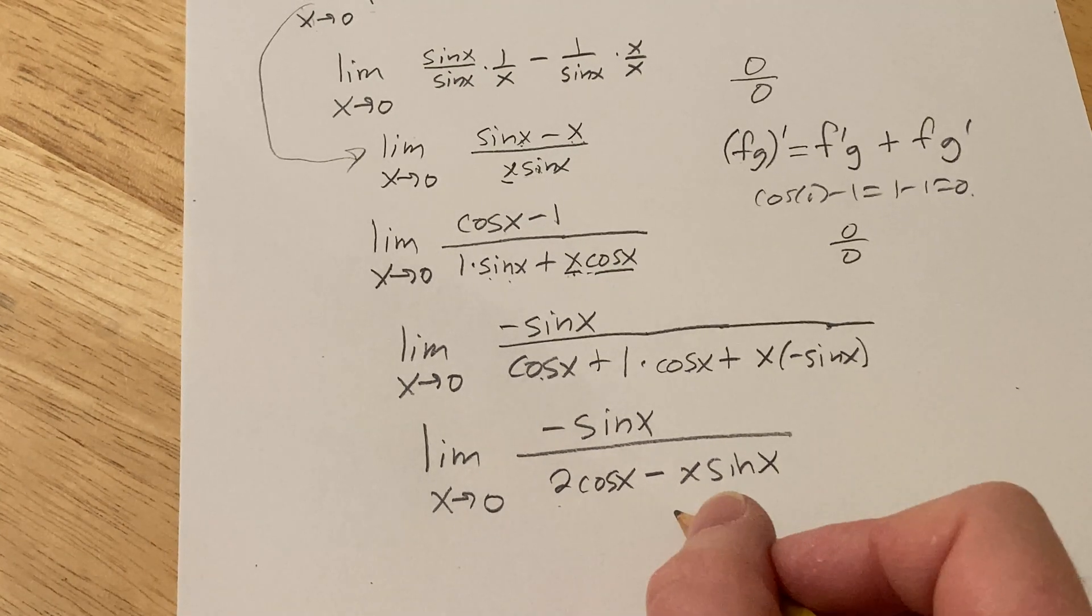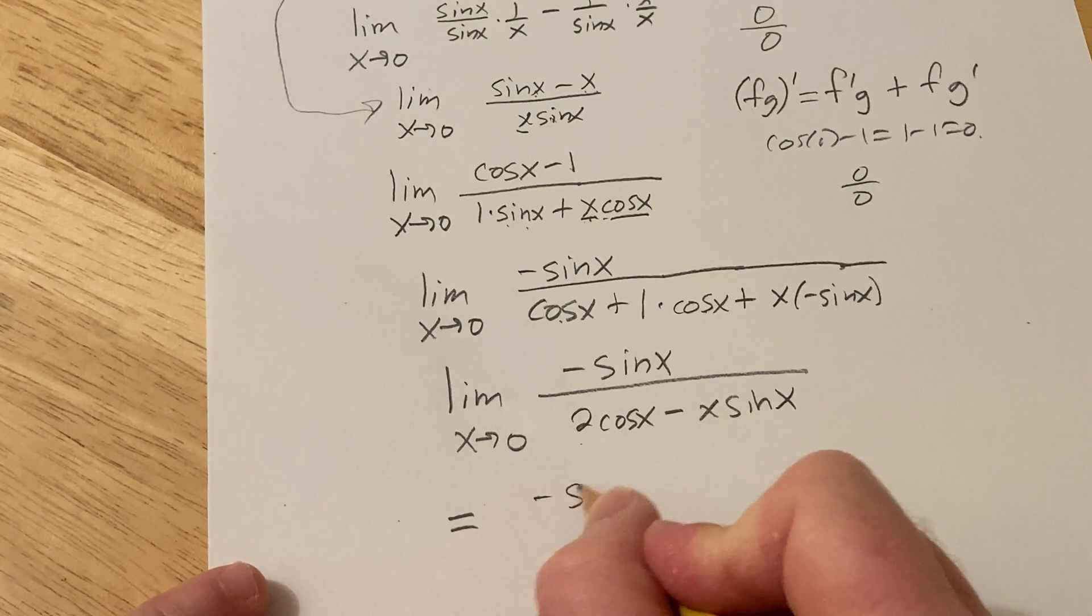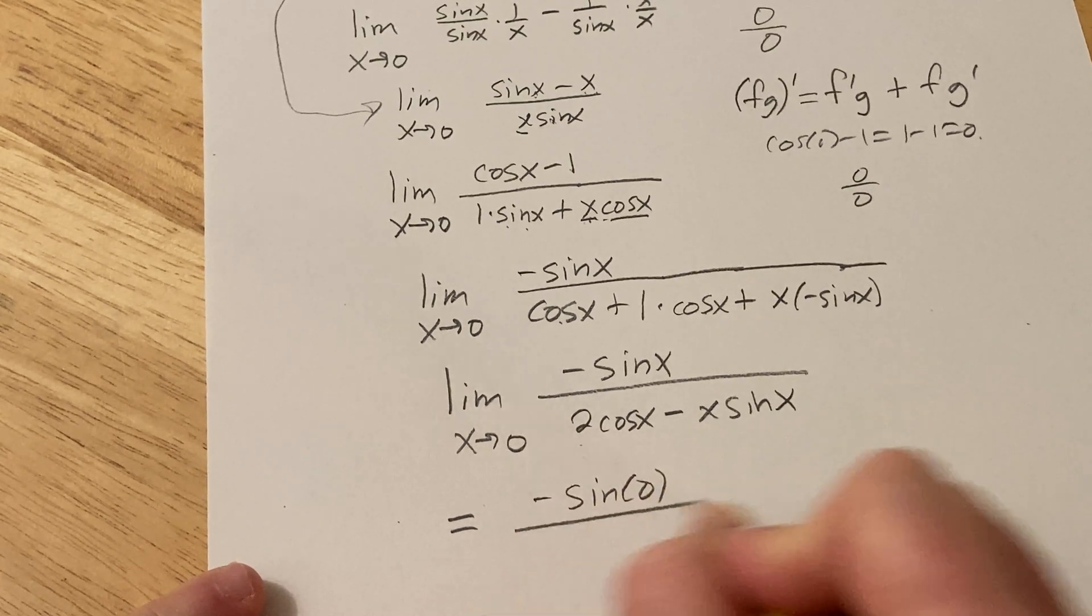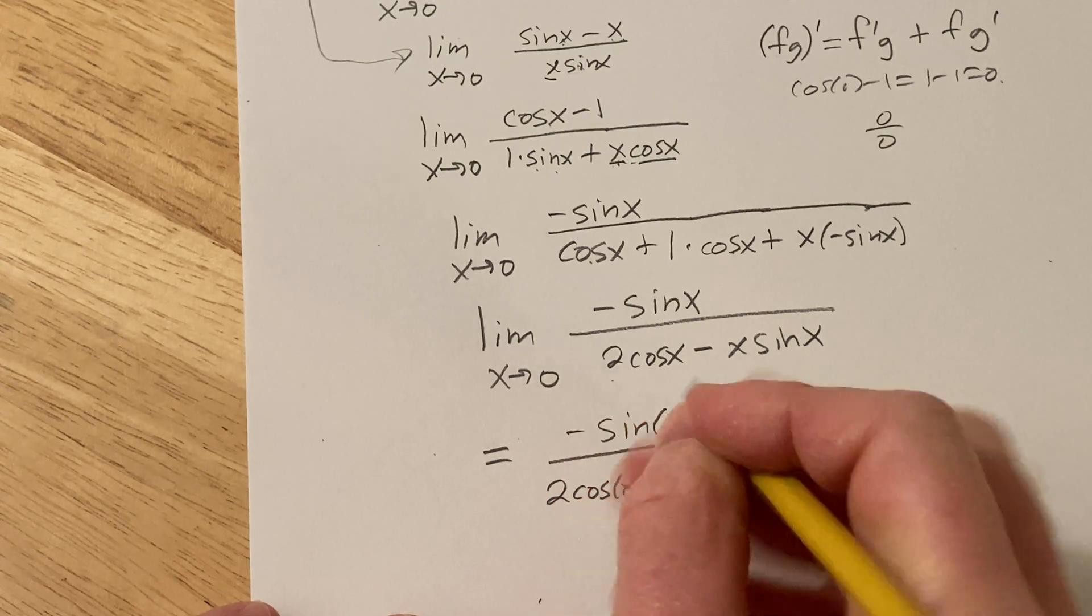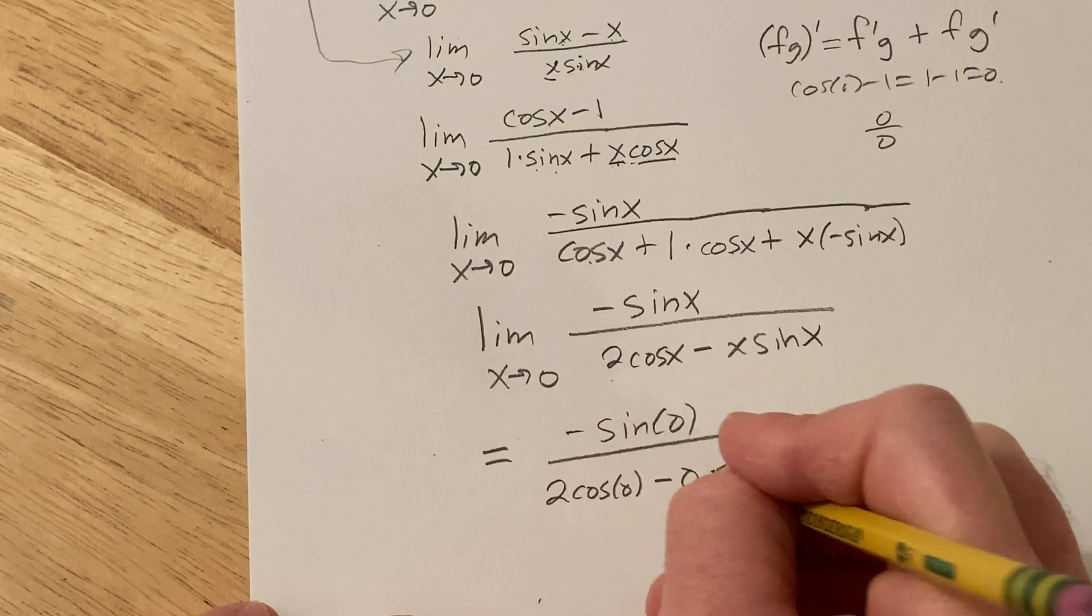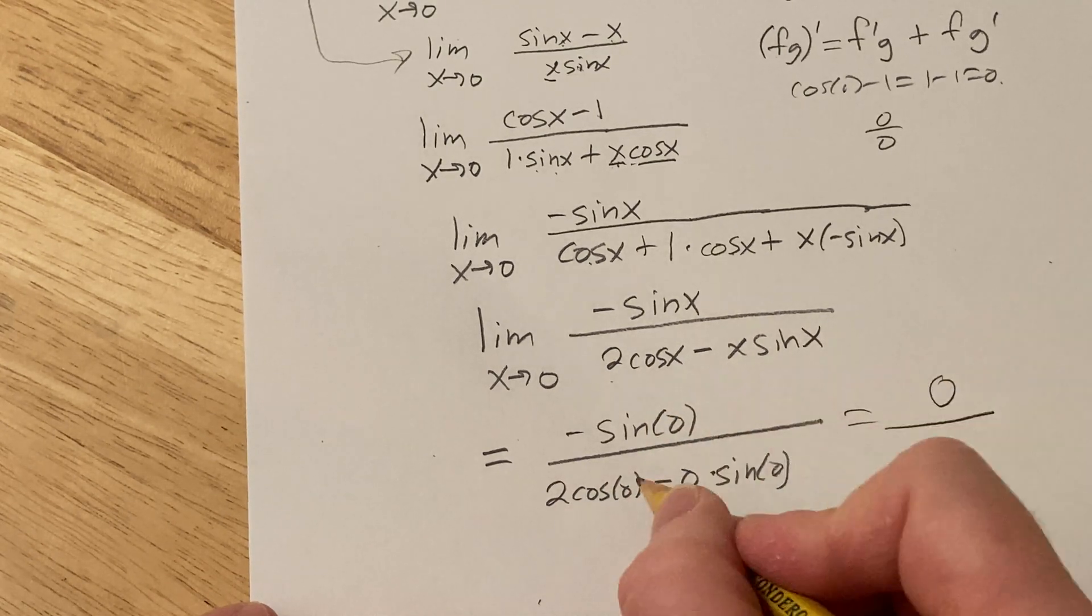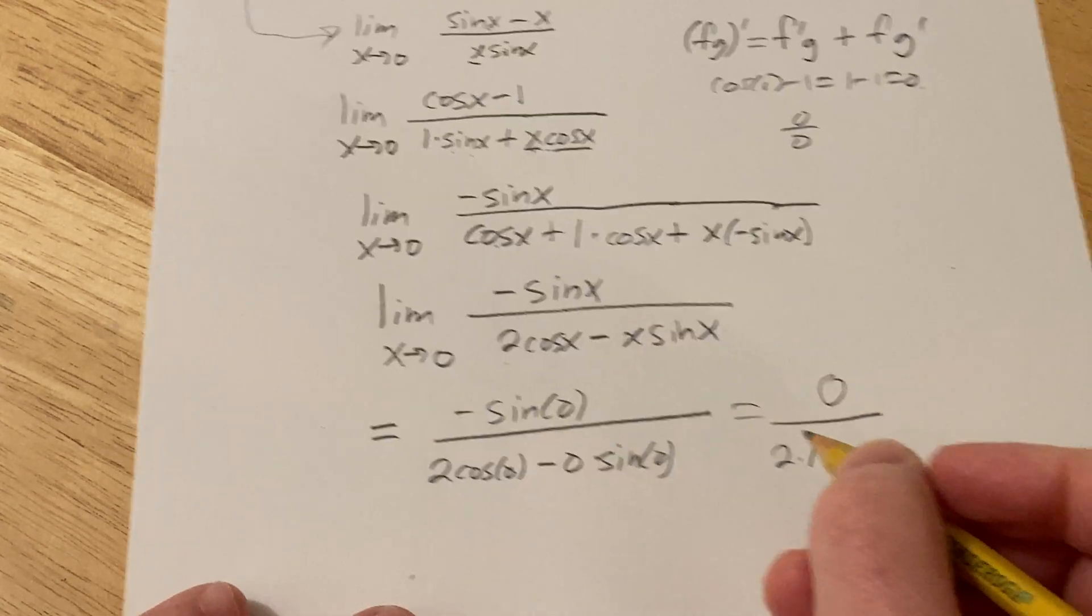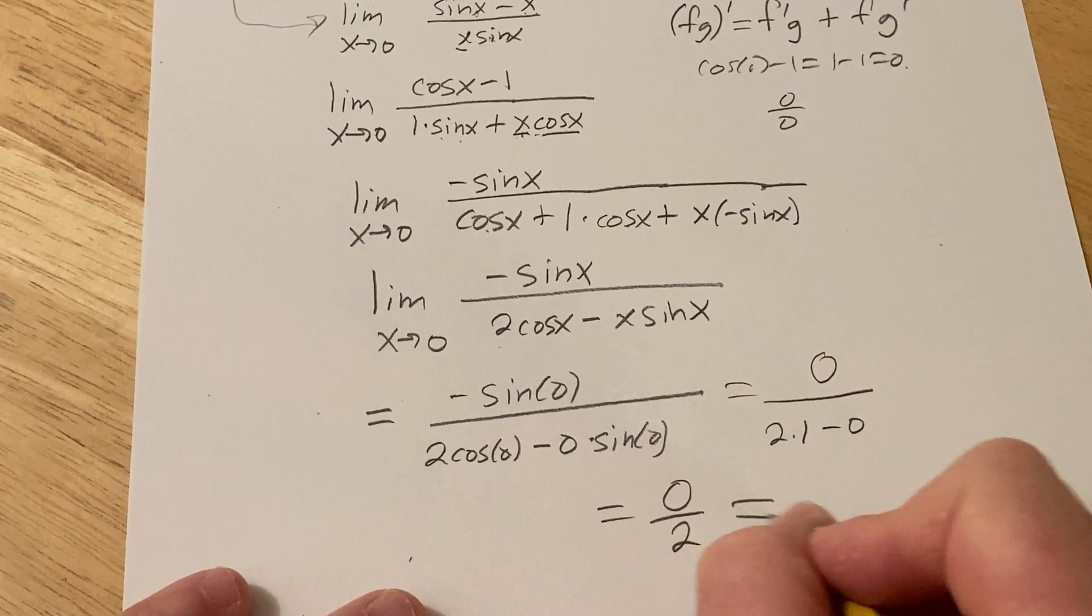I think we've finally reached a point where we can plug in 0 and it's not going to be 0 over 0. Let me show you. So this is negative sine of 0 over 2 cosine 0 minus 0 times sine of 0. Sine of 0 is 0, cosine of 0 is 1, so you get 0 over 2, so you get 0.